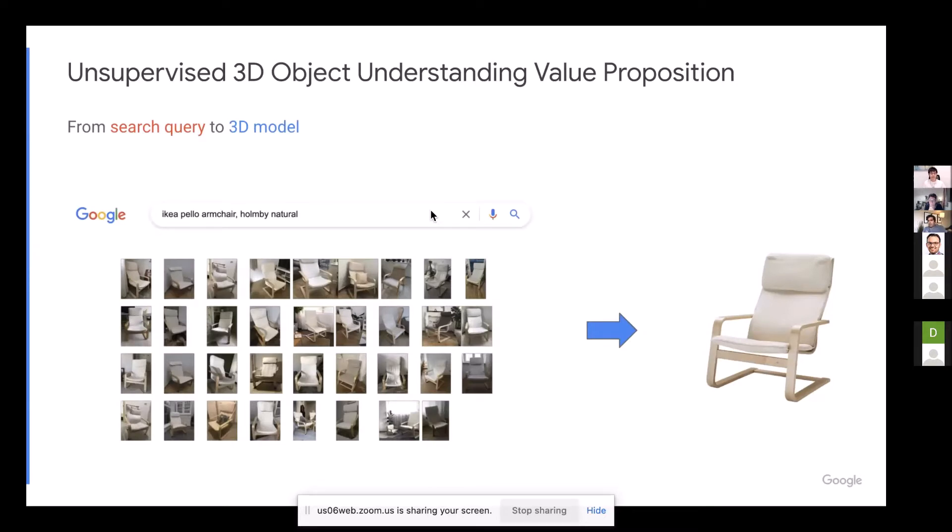So at Google, our goal is to organize the world's information. And for us, everything starts with that search box. So when you search for an object, like for example, an IKEA chair, we are very good at figuring out what you are searching for, like what you want to see. And the web is like a refrigerator of images. Like we are also very good at figuring out, hey, these are all the images of these objects that you care about.